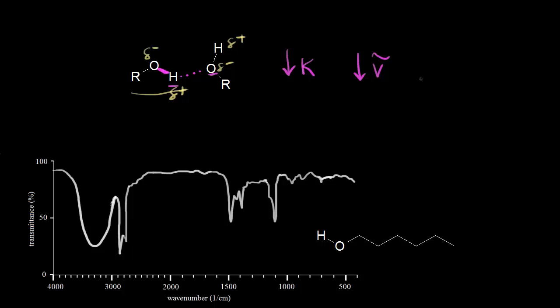At any moment in time, different alcohol molecules are going to have different amounts of hydrogen bonding. Some molecules might have a little bit of hydrogen bonding, so k decreases a little and the wave number decreases a little. But other molecules might have a lot of hydrogen bonding, decreasing k even more and therefore decreasing the wave number even more. So you get a range of wave numbers for the O-H bond when hydrogen bonding is present, giving you a very broad signal on your IR spectrum.